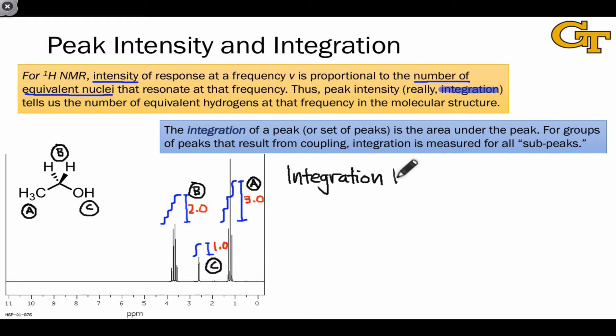In terms of structure determination, the beauty of integration is that it helps us correlate or assign signals to particular groups of hydrogens. In this particular example, the different sets of hydrogens have different numbers. Set A has 3, set B has 2, and set C has 1. So from the integrations alone, we can connect the hydrogens in the structure to the peaks within the spectrum. In general, though, you'll need to use chemical shift and information about coupling to make these assignments rigorously.